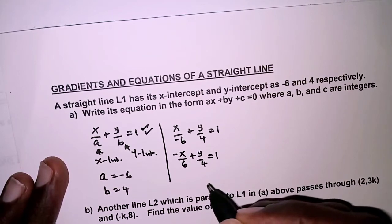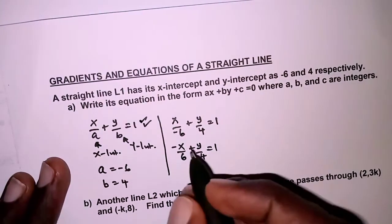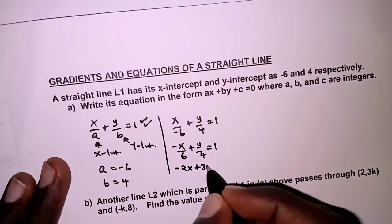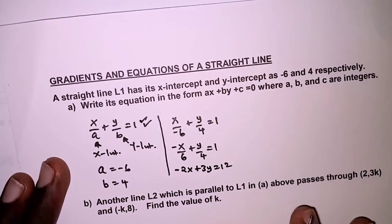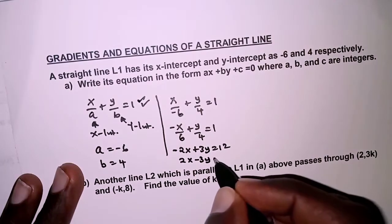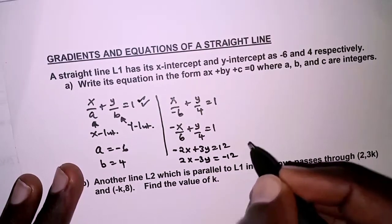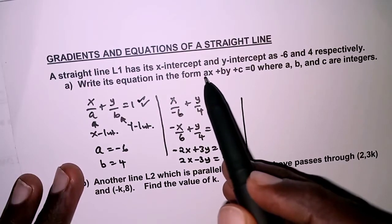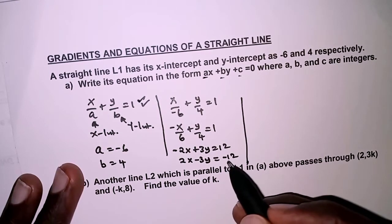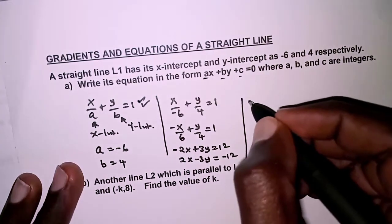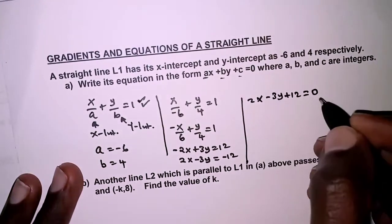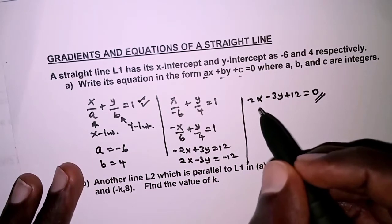Multiplying all through by the LCM, which is 12, we get negative 2x plus 3y equals 12, which rearranges to 2x minus 3y equals negative 12. Since we need the form ax plus By plus C equals zero, we bring the right-hand side across: 2x minus 3y plus 12 equals 0. This is the equation of L1 written in the required form.